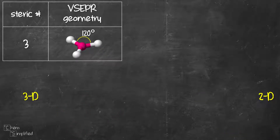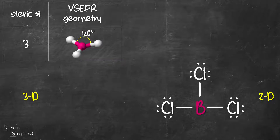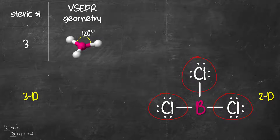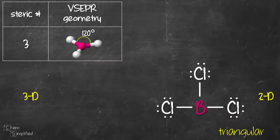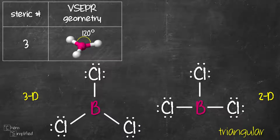Moving on to steric number 3 — our central atom is now connected to three groups. We have BCl3 as our example. B is our central atom and it's connected to three Cl atoms through single bonds. That's steric number 3. The three groups will arrange themselves as far apart from each other at equal distance, resulting in 120 degrees bond angle — that's a triangular shape. We start with boron in the center and connect it to each chlorine through single bonds. For a triangular shape, all atoms are on the same plane with a bond angle of 120 degrees.